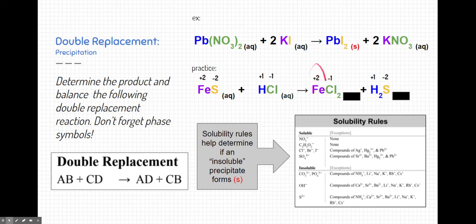Iron 2 chloride, iron being a positive two, chlorine being a negative one, means that we need two chlorines over here in order to counteract the one chlorine over there. Likewise, hydrogen being a positive one and sulfur being a minus two means that we need two hydrogens for every sulfur. Now you might notice that this reaction is not balanced. There's more hydrogens and chlorines on the right side of the reaction than on the left. Therefore, I need to add a coefficient of two in front of the hydrochloric acid.